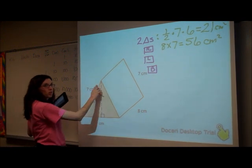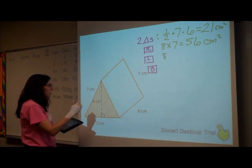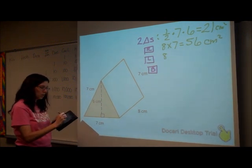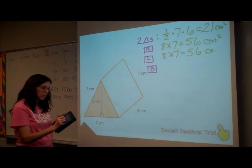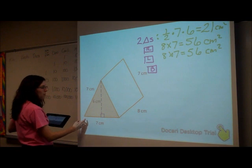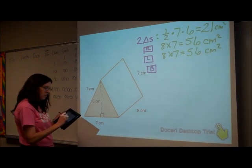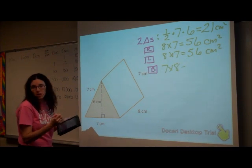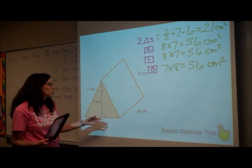Actually, it's an equilateral triangle, so it makes it a little easier for us. So this left side over here is going to be eight by seven as well, so it'll be 56 square centimeters. My bottom will be seven by eight, or eight times seven. So that'll be 56 square centimeters.